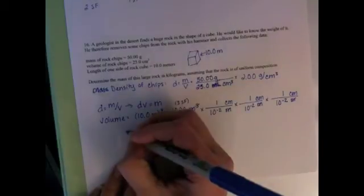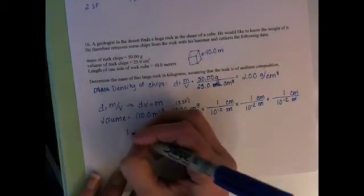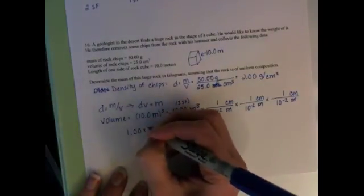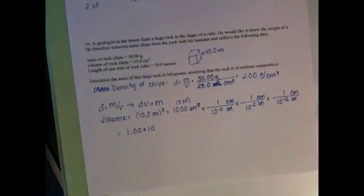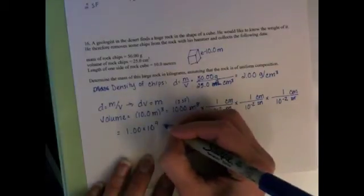And that's going to give us 1.00 times 10 to the 1, 2, 3, 4, 5, 6, 7, 8, 9 cubic centimeters.